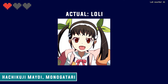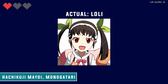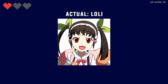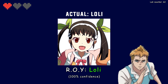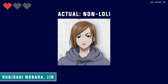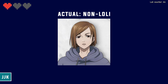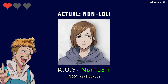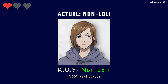The sixth lolly is Hachikuji Mayoi from the Monogatari series. At 12 years old, she's no doubt a lolly, and I doubt she'll give Roy much trouble. Roy is 100% confident that she's a lolly — and he's not wrong, so fair play. Our penultimate non-lolly character is Kukisaki Nobara from Jujutsu Kaisen, probably the least lolly-looking character on our list, which Roy apparently agrees with at 100% confidence. Roy has correctly classified Kukisaki as a non-lolly character.